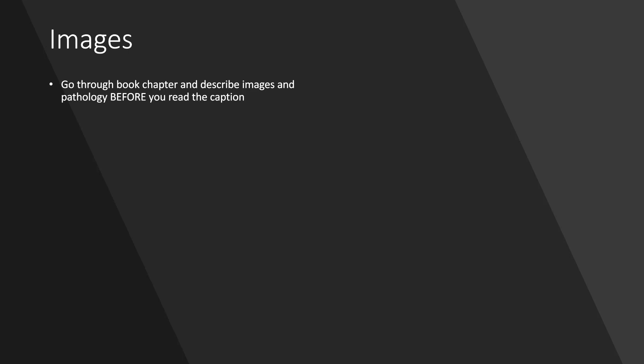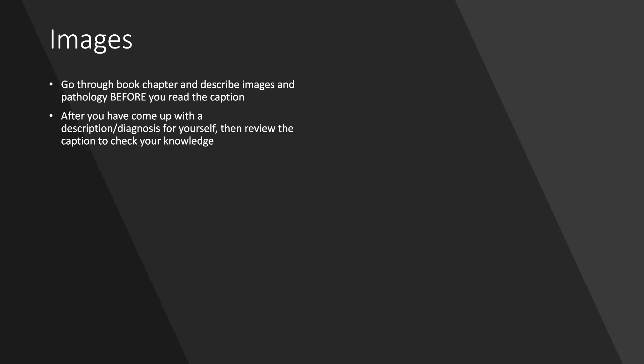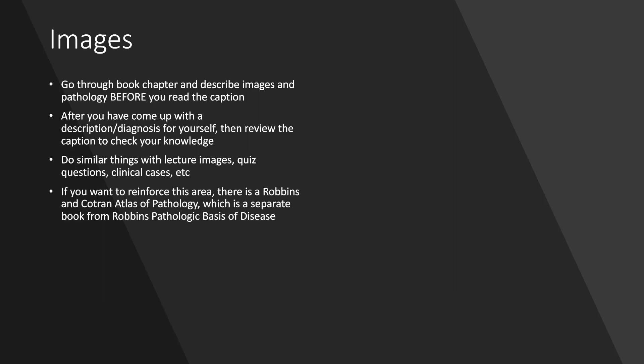What about images? Go through your book chapter in pathology and describe the images before you read the captions. After you have come up with a description and diagnosis for yourself, then review the caption to check your knowledge. You should do similar things with lecture images, quiz questions, clinical cases — any type of access you have to images. If you want to reinforce this area, I recommend Robbins and Cotran Atlas of Pathology. It is a separate book from Robbins' Pathologic Basis of Disease, and it just has a lot of pathology pictures.